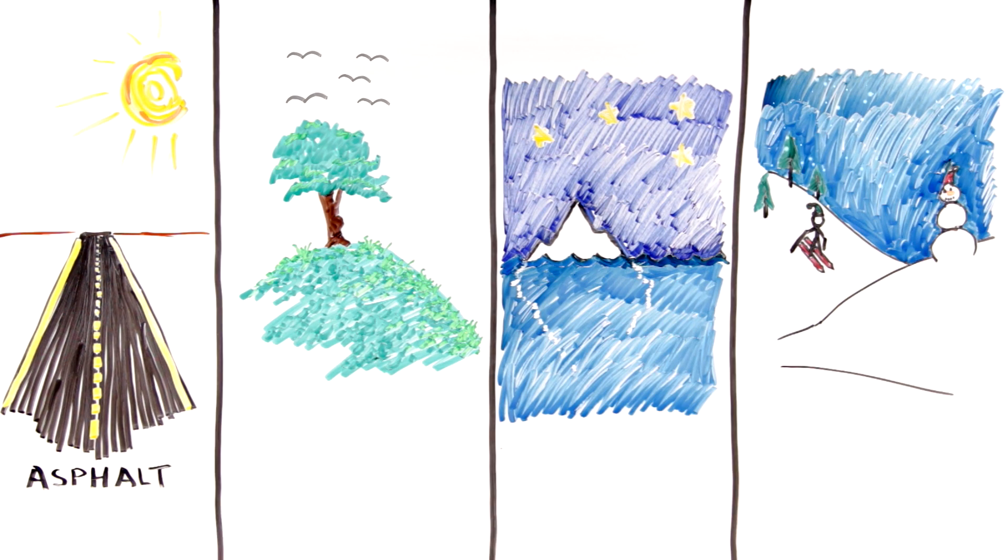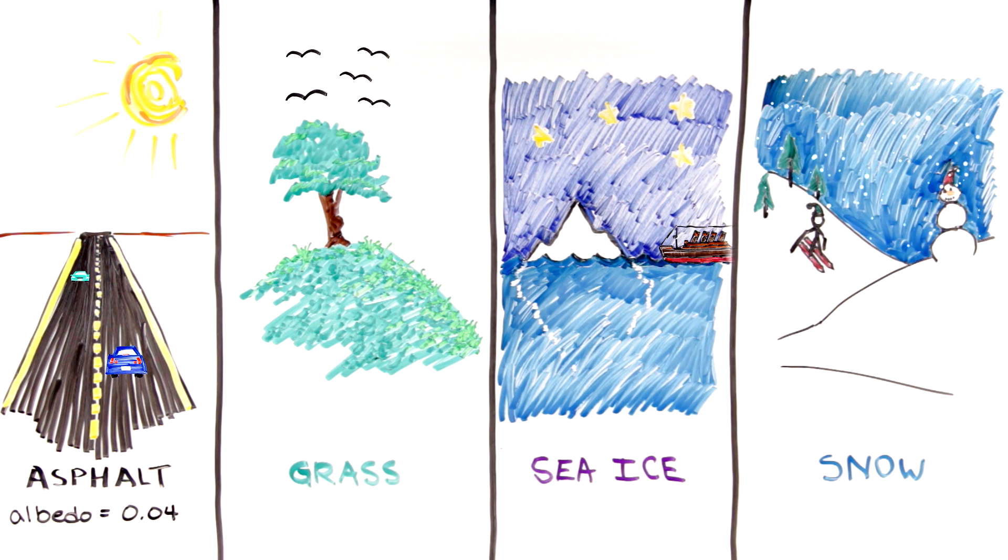Very dark surfaces, such as new asphalt on a road, reflect little and absorb more of the light, so they appear dark.